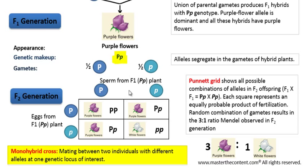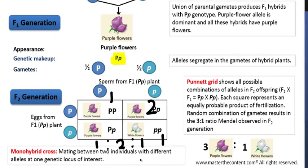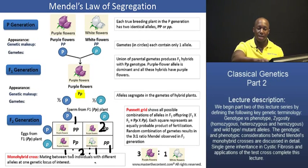Selfing or self-pollinating the F1 hybrid is an example of a monohybrid cross. That is how the cross proceeds from the parental generation to the first filial generation to the second filial generation. The phenotypic ratio is three to one — for every three purple flowers, there is one white flower. The genotypic ratio is slightly different: one homozygous dominant, two heterozygous, and one homozygous recessive, giving a ratio of one to two to one. We will now move on, as this explains the law of segregation and how alleles separate into gametes.